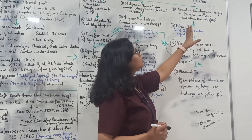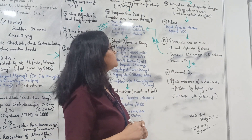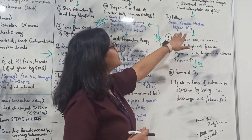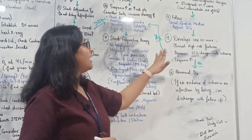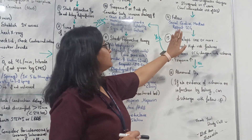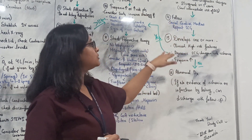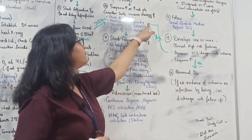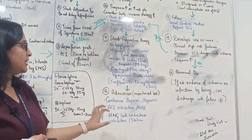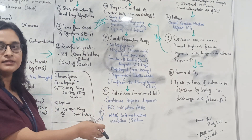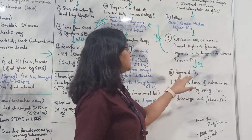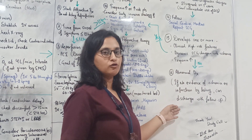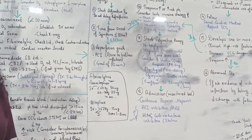The third ECG interpretation is normal or non-diagnostic changes in the ST segment or T wave, indicating low or intermediate risk of ACS. In this case, follow serial cardiac markers — troponin, myoglobin, CKMB — and repeat the ECG. If high-risk clinical features, dynamic ECG changes, or elevated troponin develop, follow the same adjunctive therapy and admission protocol. If there is no evidence of ischemia or infarction, the patient can be discharged with follow-up.